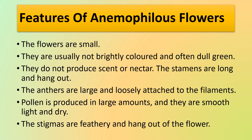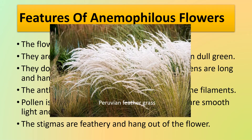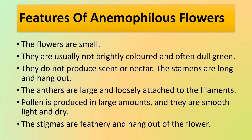Now let's look at the different features of anemophilous flowers. The flowers are small, as you can see in this picture of a Peruvian feather grass, and they are usually not brightly colored — often dull green. They do not produce scent or nectar. The stamens are long and hang out; the anthers are large and loosely attached to the filaments so that the slightest wind can move them. They are called versatile anthers.